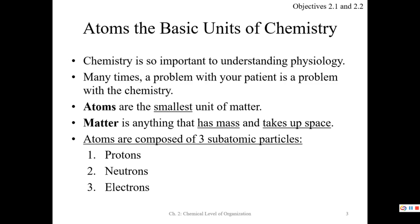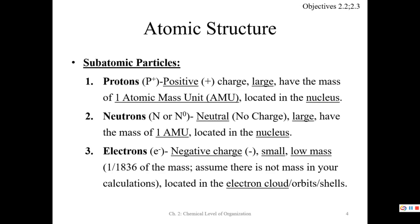The smallest unit of matter is going to be your atom, and matter is anything that has mass and takes up space. We might say things like solids, liquids, and gases — those three major states of matter. Atoms are made up of three subatomic particles: protons, neutrons, and electrons. Let's take a look at these protons, neutrons, and electrons and get some of their properties.